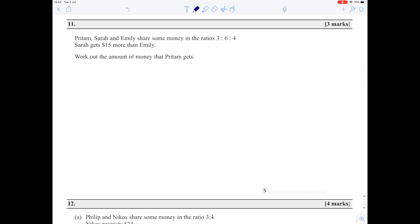Last question: Pritam, Sarah, and Emily share some money in the ratio 3 to 6 to 4. Sarah gets $15 more than Emily. If you look at the ratio, Sarah actually has 2 more parts than Emily. So that $15 that Sarah has more than Emily must represent 2 parts.